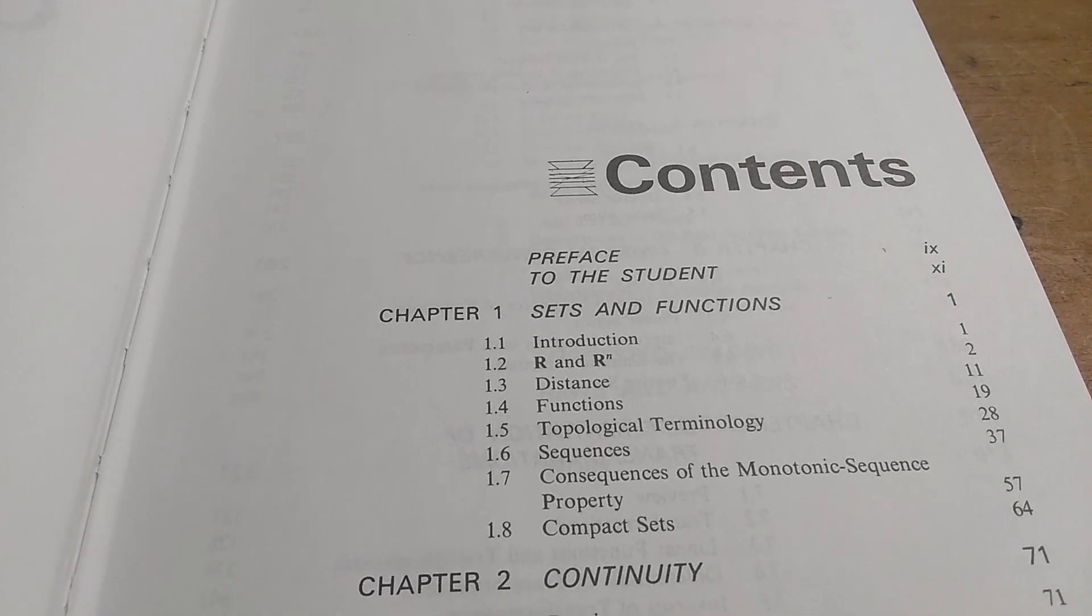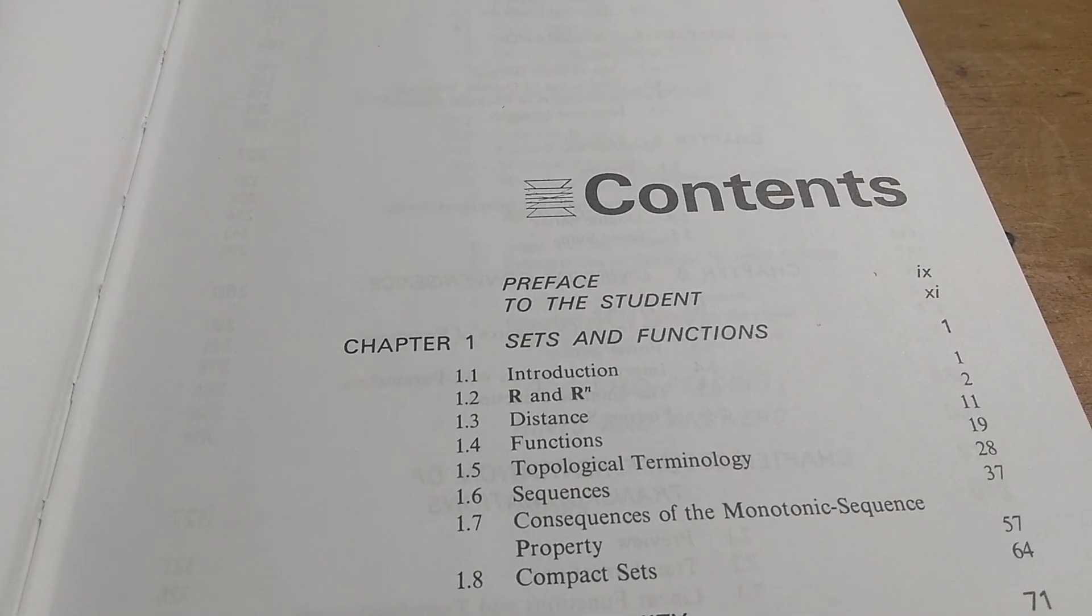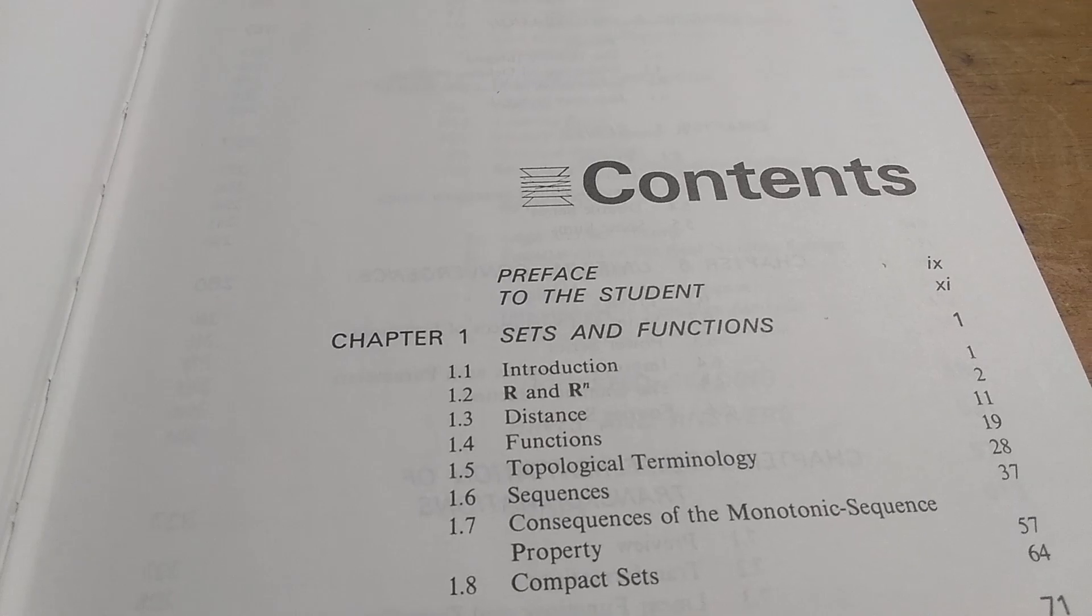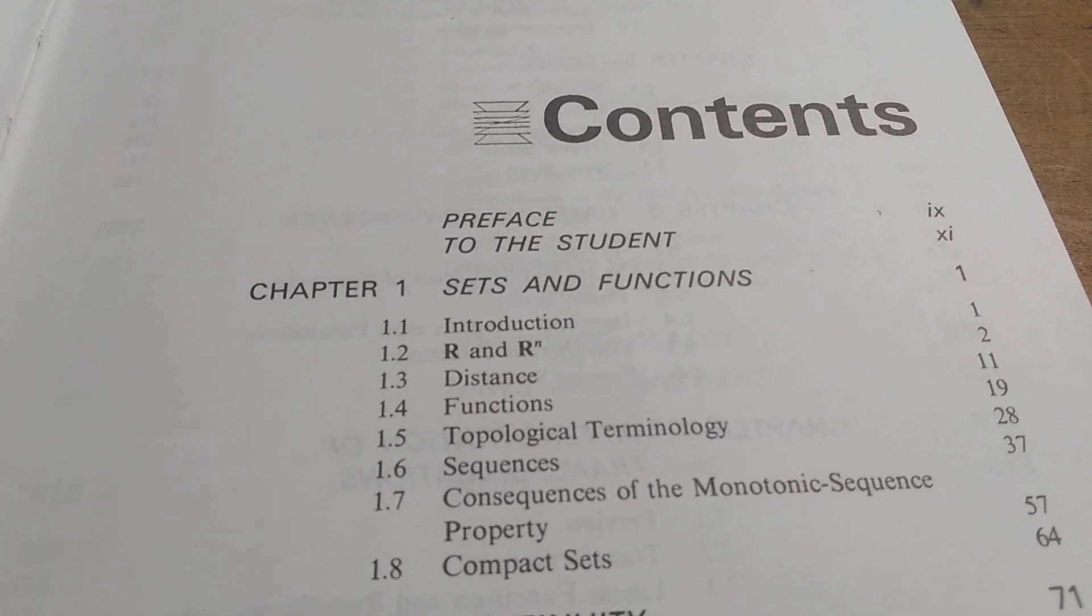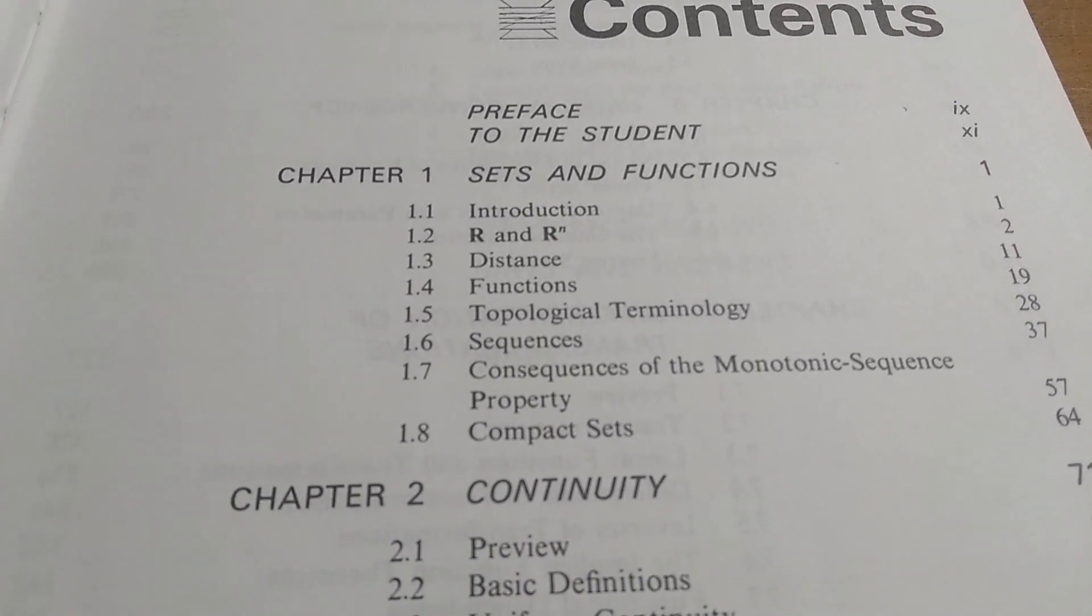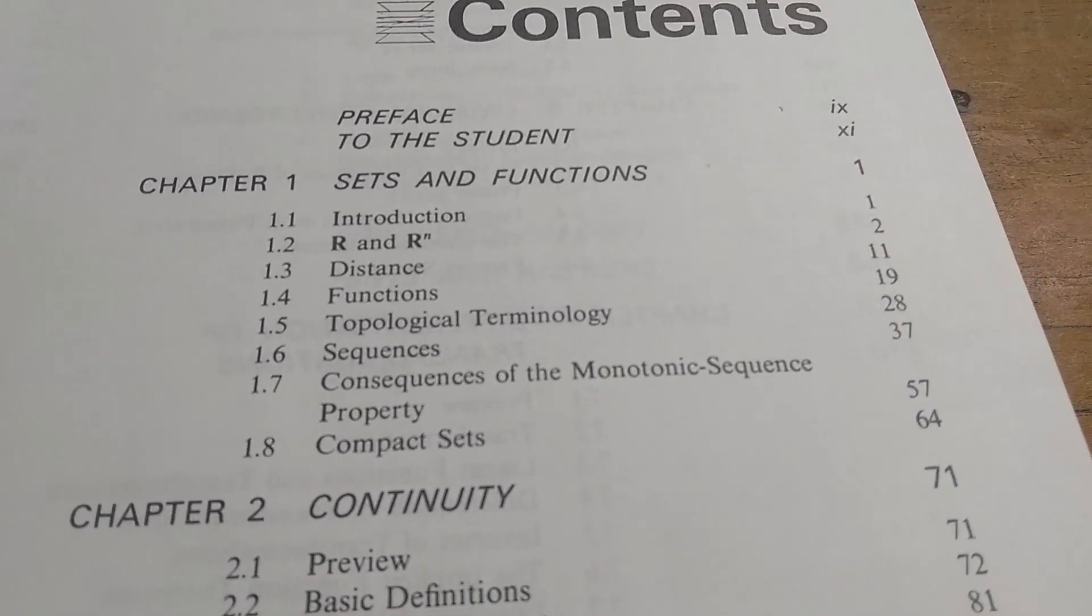I think what makes this book a little more sophisticated than other advanced calculus books is that it starts off by doing calculus in one dimension and in n dimensions, as you can see here. And it talks about topological terminology, etc.